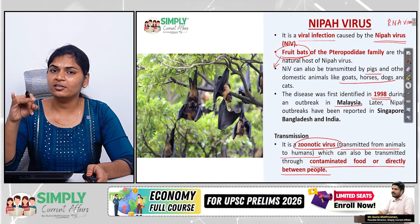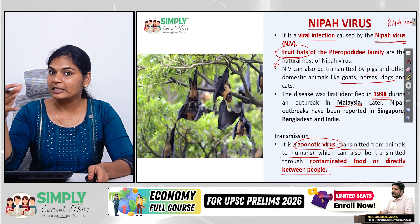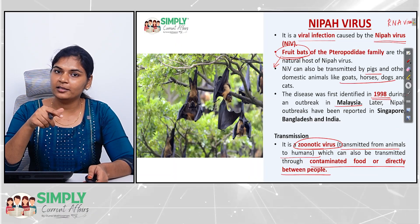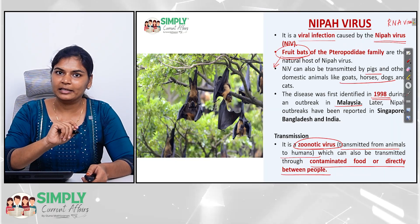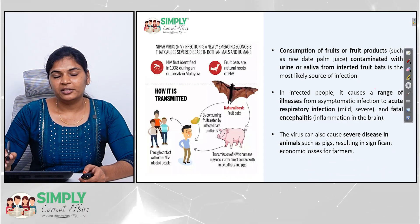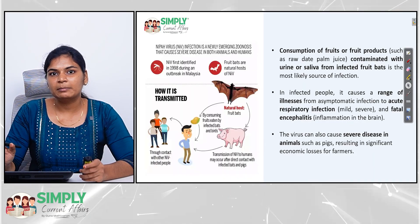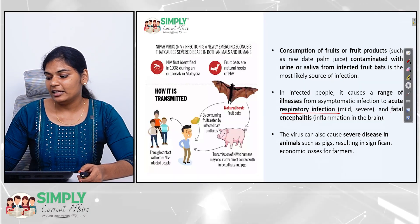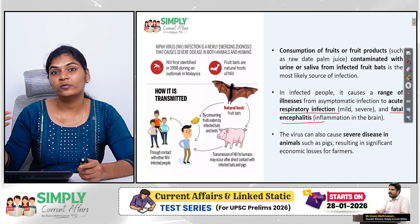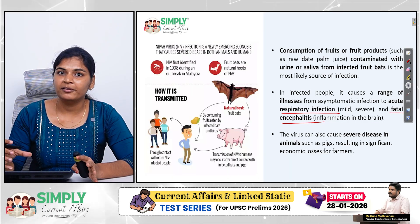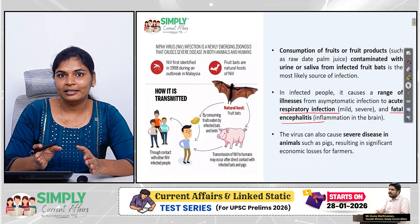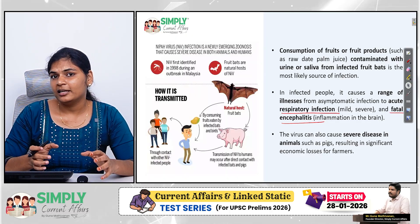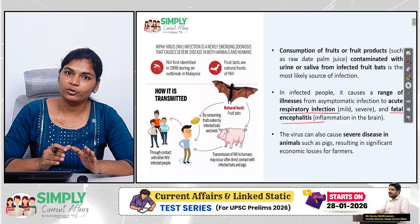What are the symptoms? The symptoms can be asymptomatic — no symptoms — or they can range from acute respiratory infection with breathing difficulty to fatal encephalitis, meaning brain swelling, which can lead to death. The WHO says that the fatality rate for Nipah virus — the percentage of infected people who may die — is estimated to be 45 to 75 percent according to the World Health Organization.